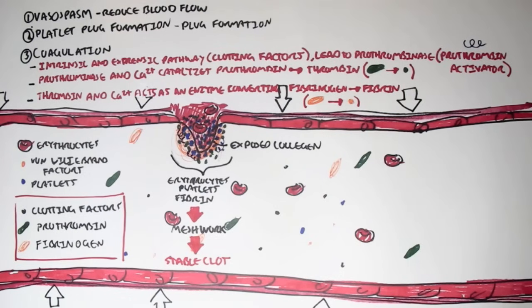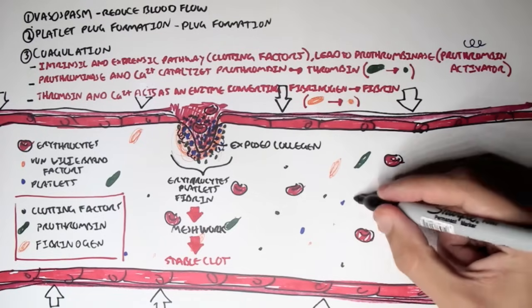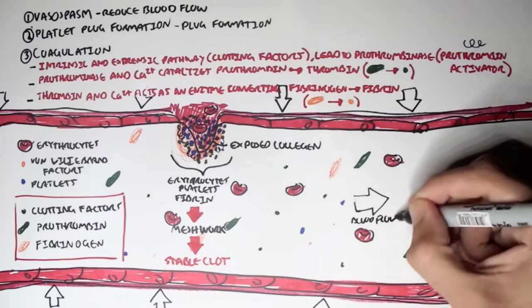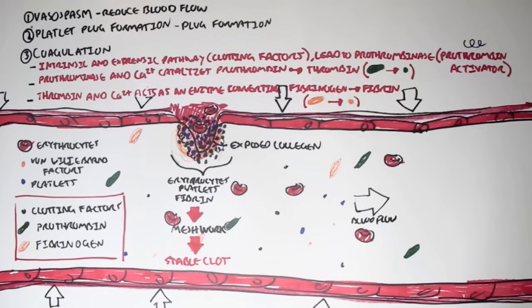So, as you can see, with the help of vasoconstriction, which reduces blood flow, and the platelet plug formation, which forms a temporary plug, and then coagulation, which forms a fibrin meshwork, these three steps will, essentially, form a stable clot, which will then heal in time. And so, when this blood vessel is healed, then blood flow can return back to normal, and so blood can be supplied, once again, to the surrounding tissues.